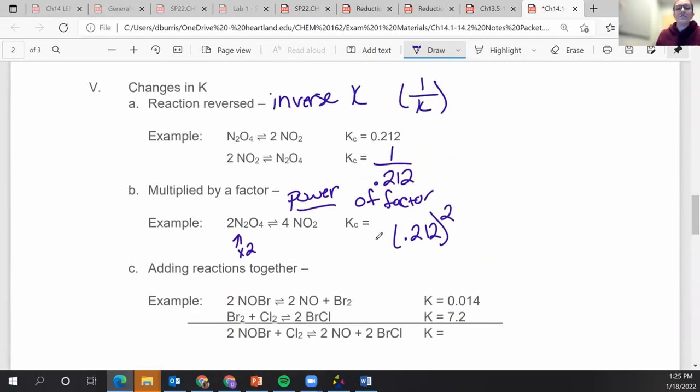And then when you add reactions together, you don't add K values, you multiply the K values. So if I'm adding these reactions together to get this overall reaction, I'm not adding my K values. I'm going to multiply that times 7.2, which I think is 0.1008.